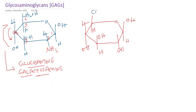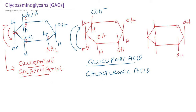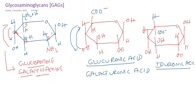There is an isomer of glucuronic acid. If I write the same glucuronic acid with a different spatial configuration — up, down, up, down — with the COO⁻ group in a different position, it becomes iduronic acid. So we may see glucuronic acid, galacturonic acid, or the isomer of glucuronic acid called iduronic acid in different glycosaminoglycans.